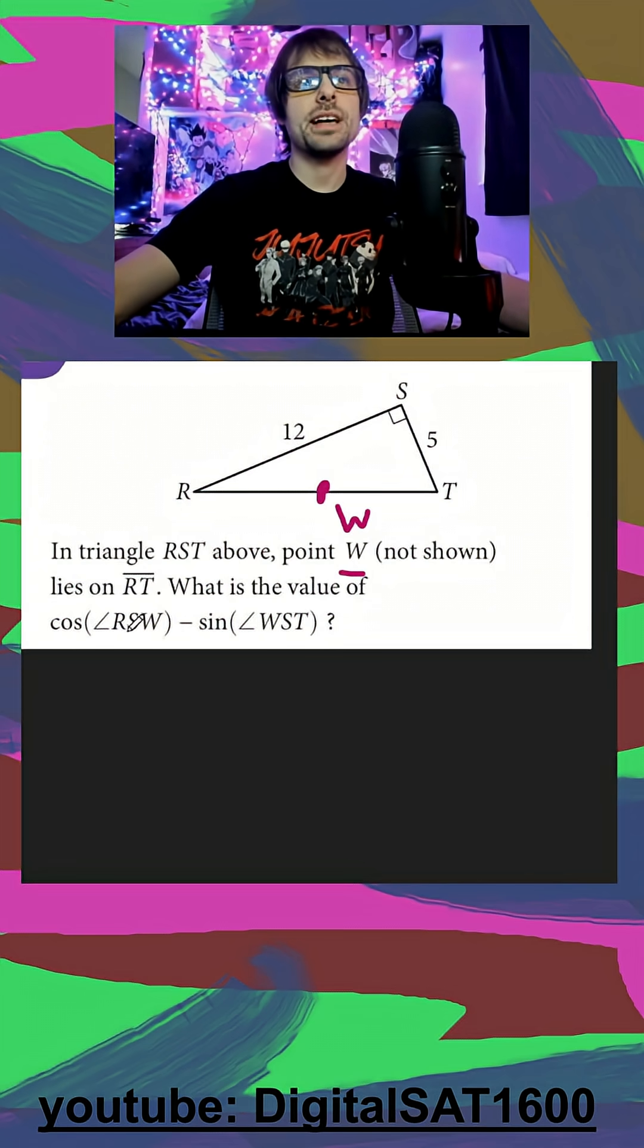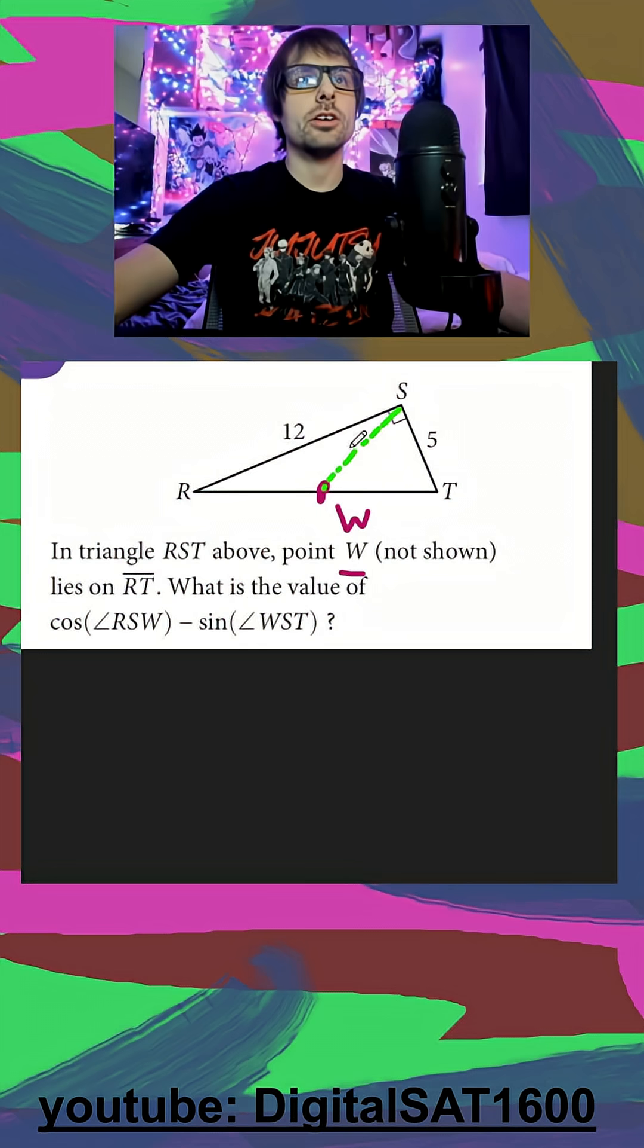Next, they say the cosine of RSW, RSW. So we kind of draw a line. And they want the cosine of this angle. And then they want to subtract the sine of WST, or this angle.